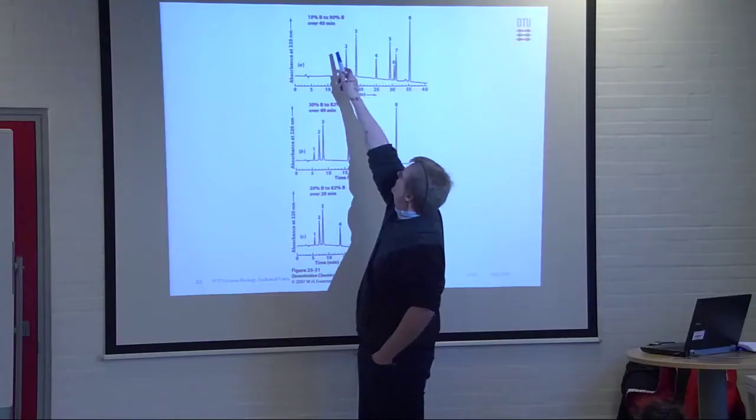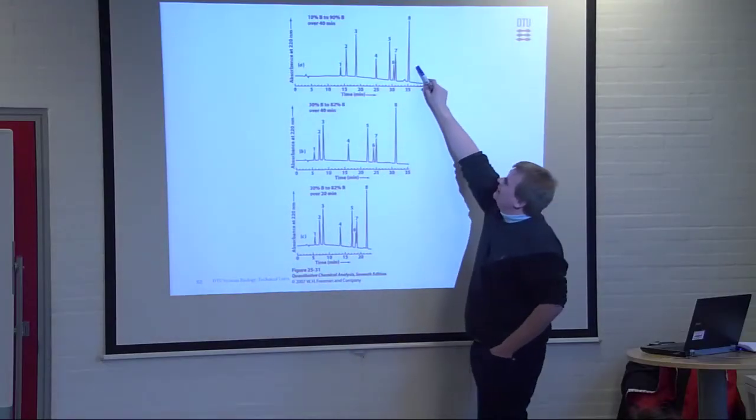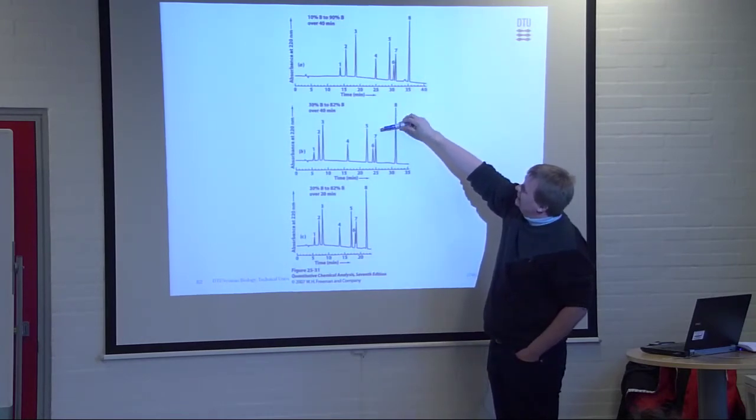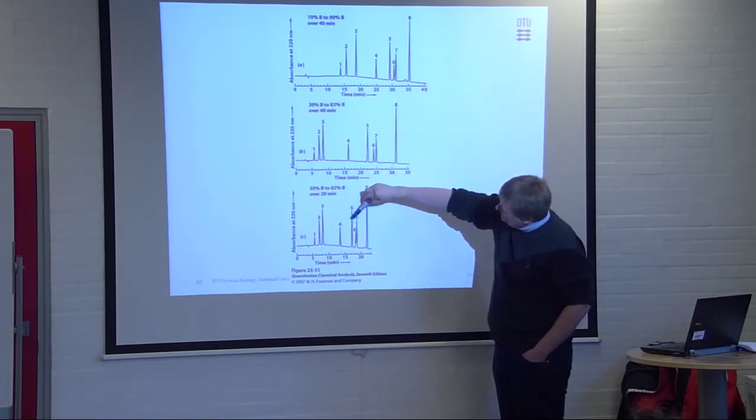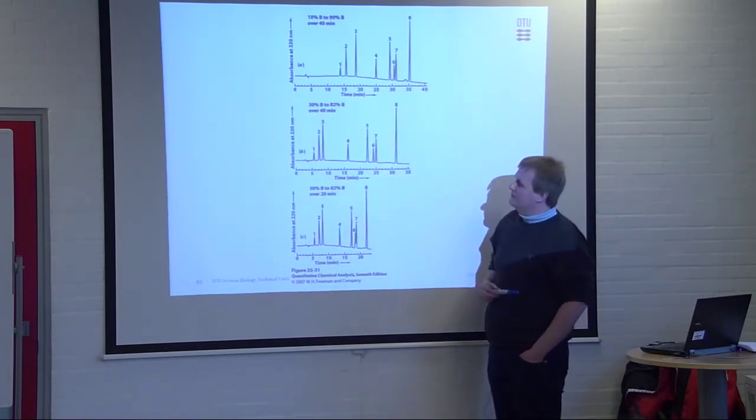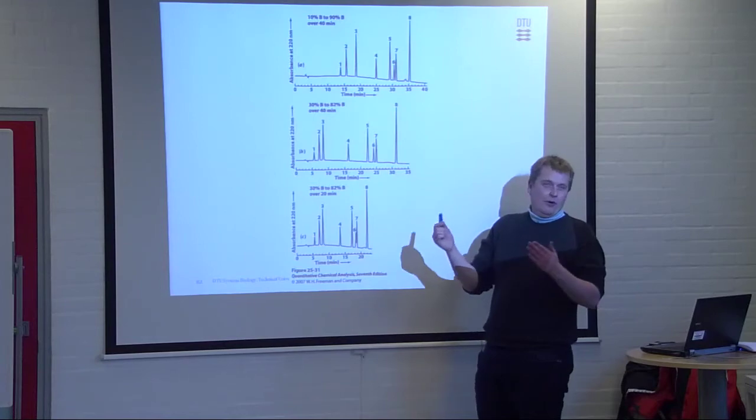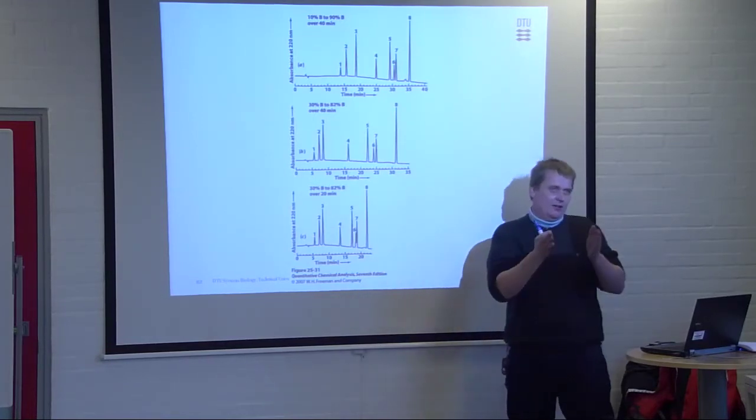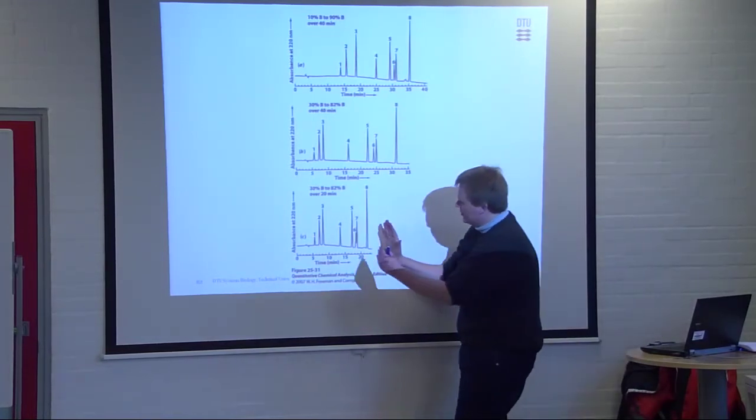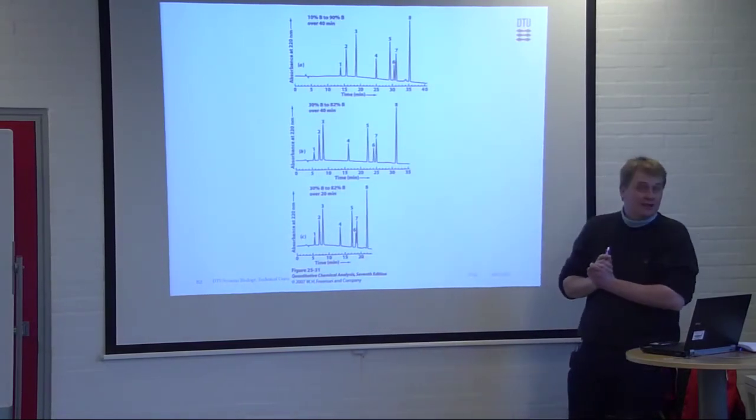But then again, why just do it all and do it continuously in gradient mode? Which is what everybody does today. So, you could take 10 to 90 in 40 minutes, and we get everything separated. And here we get it even faster, and now we start to get into trouble. But, of course, if we get a more efficient column, so a column with a smaller particle size, we could squeeze the peaks together, and we could separate them nicely.